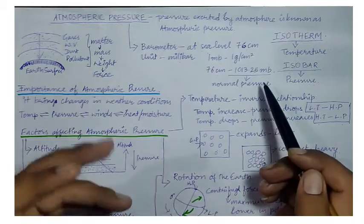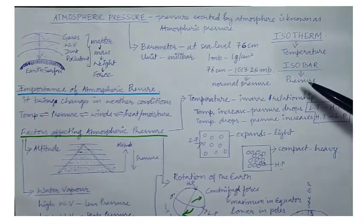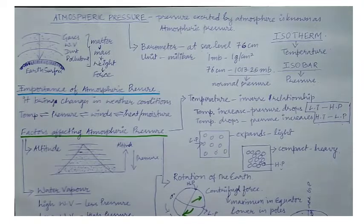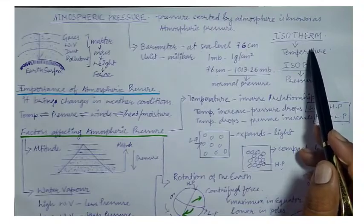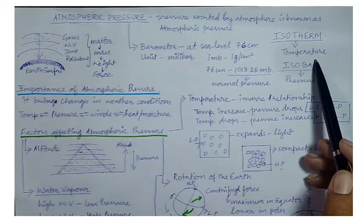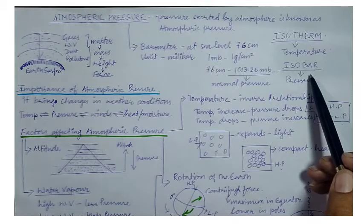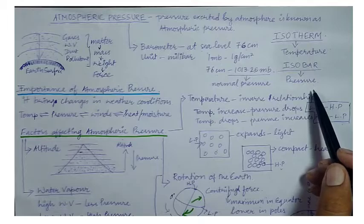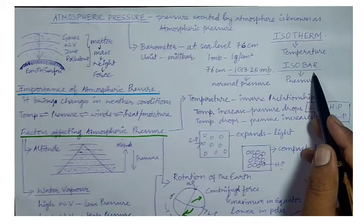If pressure goes above 1013.25 millibars it is high pressure, and if it goes below it is low pressure. Similar to an isotherm — the imaginary line joining places of equal temperature — there is an imaginary line joining places of equal pressure on the Earth's surface, which we call an isobar. Iso means equal, bar means pressure.